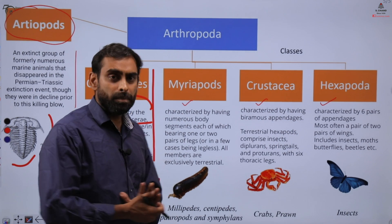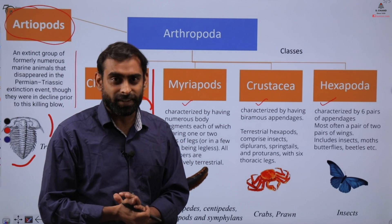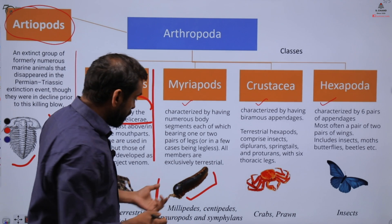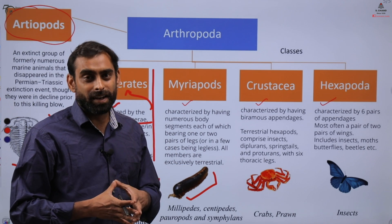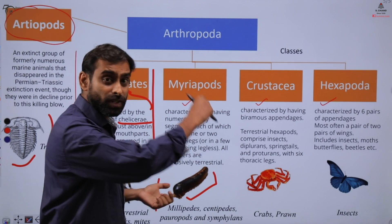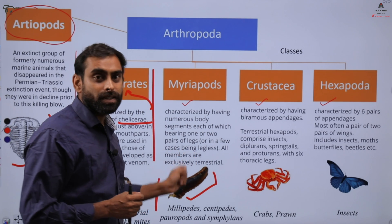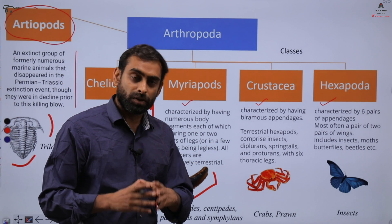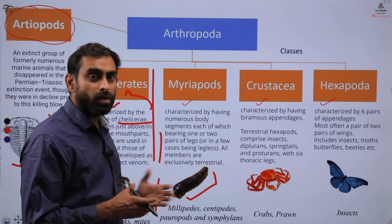The next class is Myriapoda. These organisms appear to have thousands of pairs of legs — 'myriad' means millions, hence the name, though in reality they may have hundreds. They are characterized by having numerous body segments with the whole body segmented, and a very large number of legs, though there are some exceptions with legless organisms. It is important to note that this segmentation is external only — it is not the true internal metamerism seen in annelids. Common examples include centipedes and millipedes.